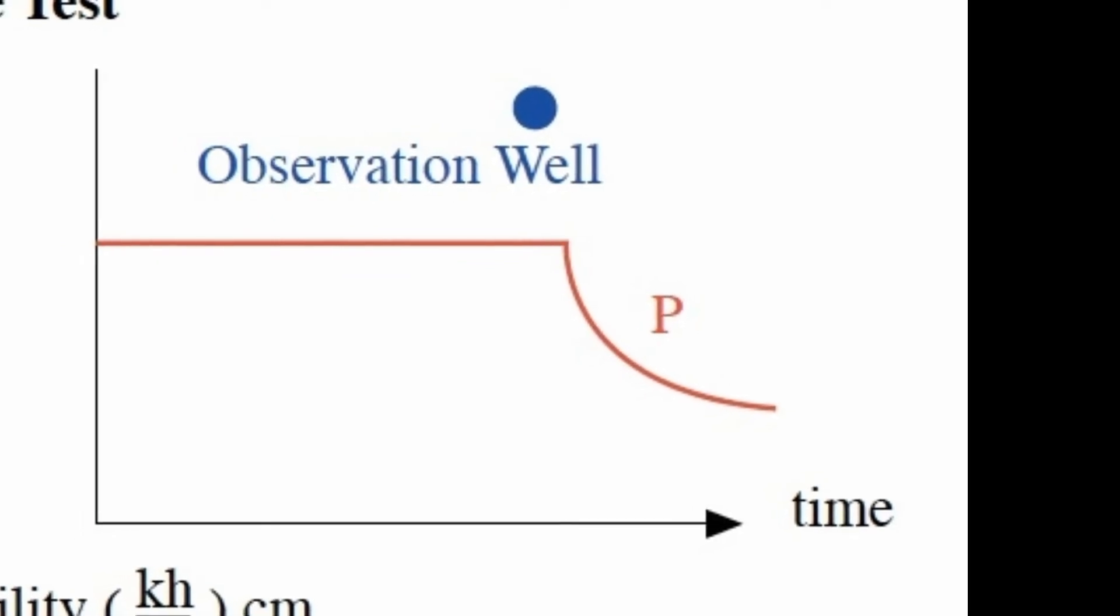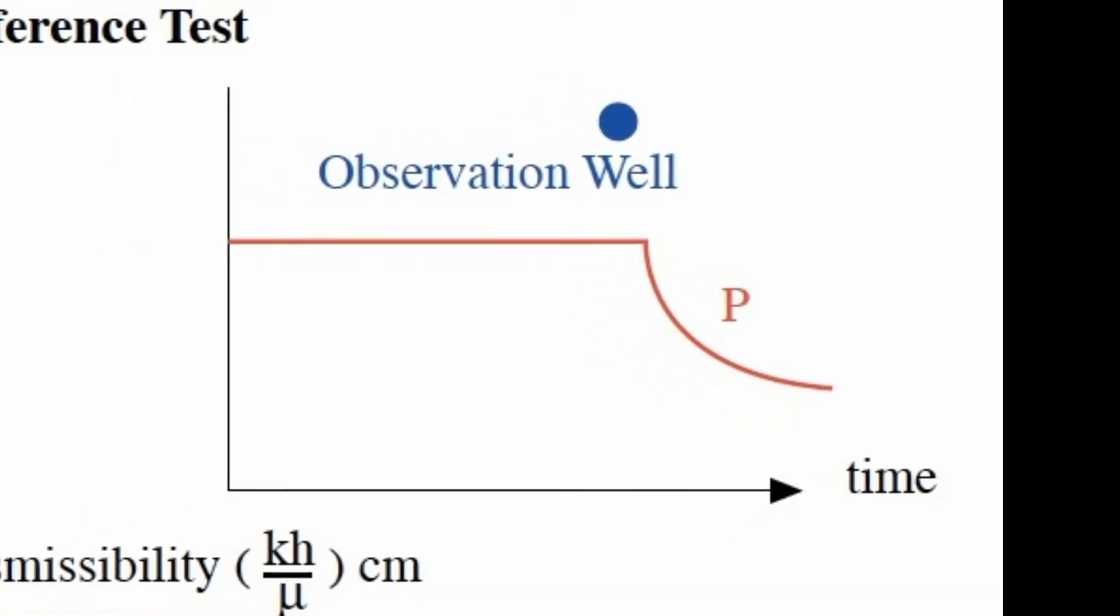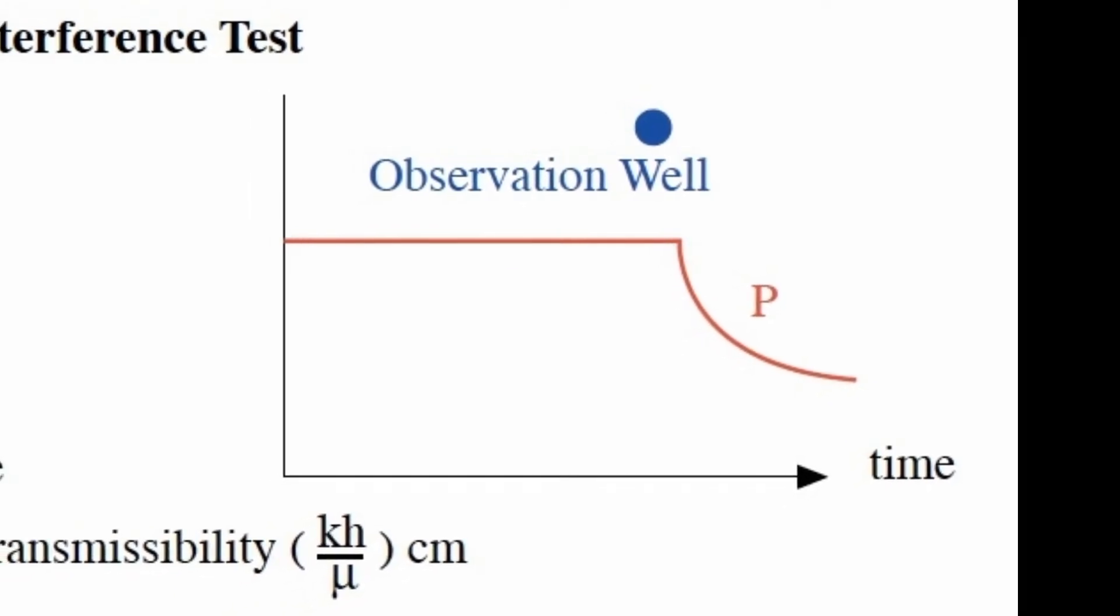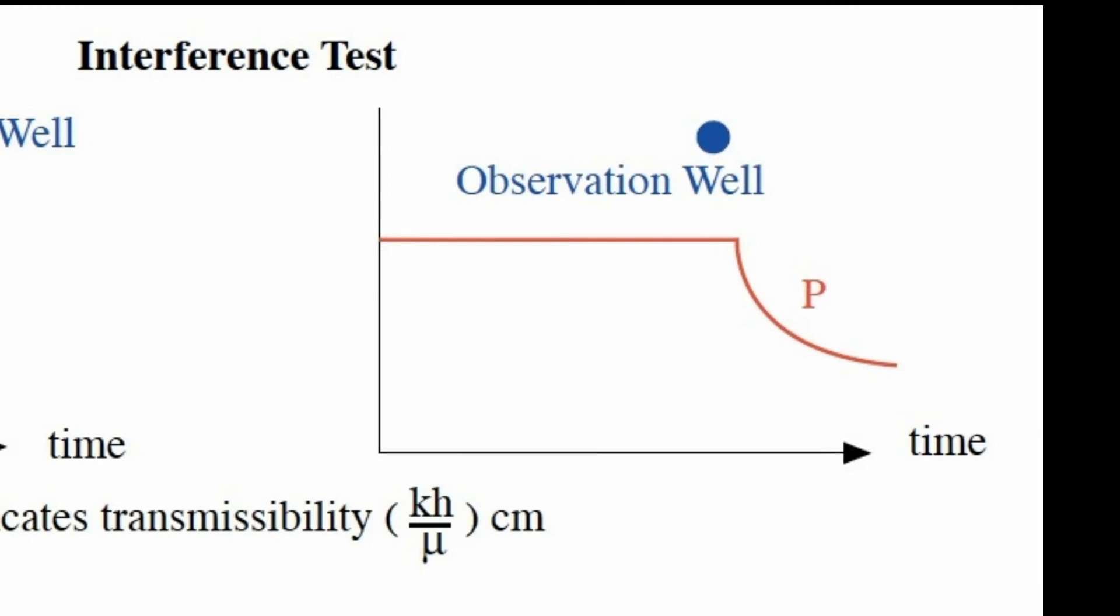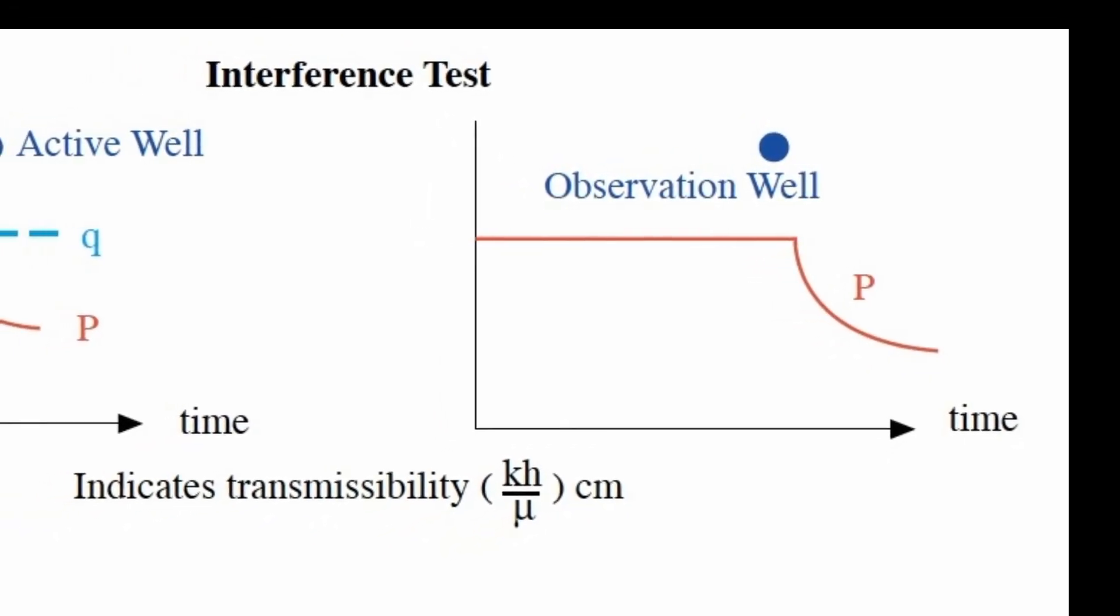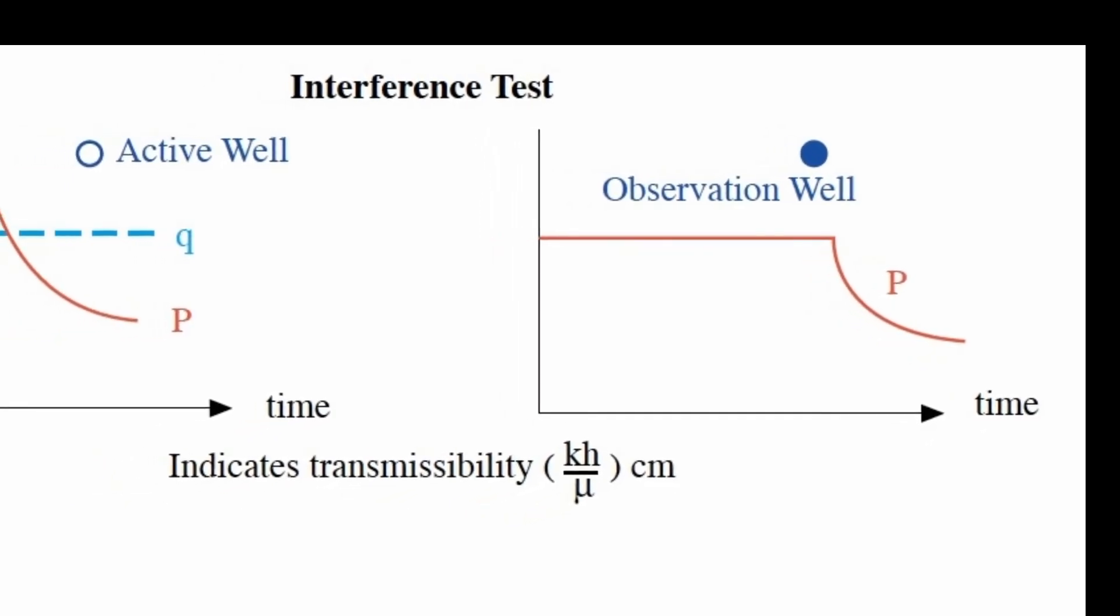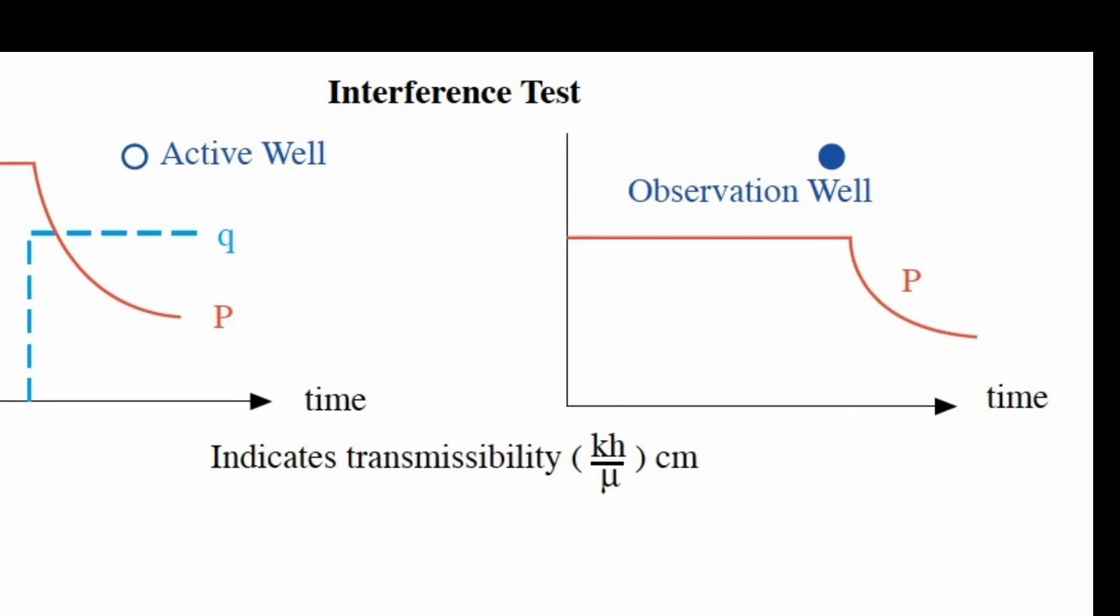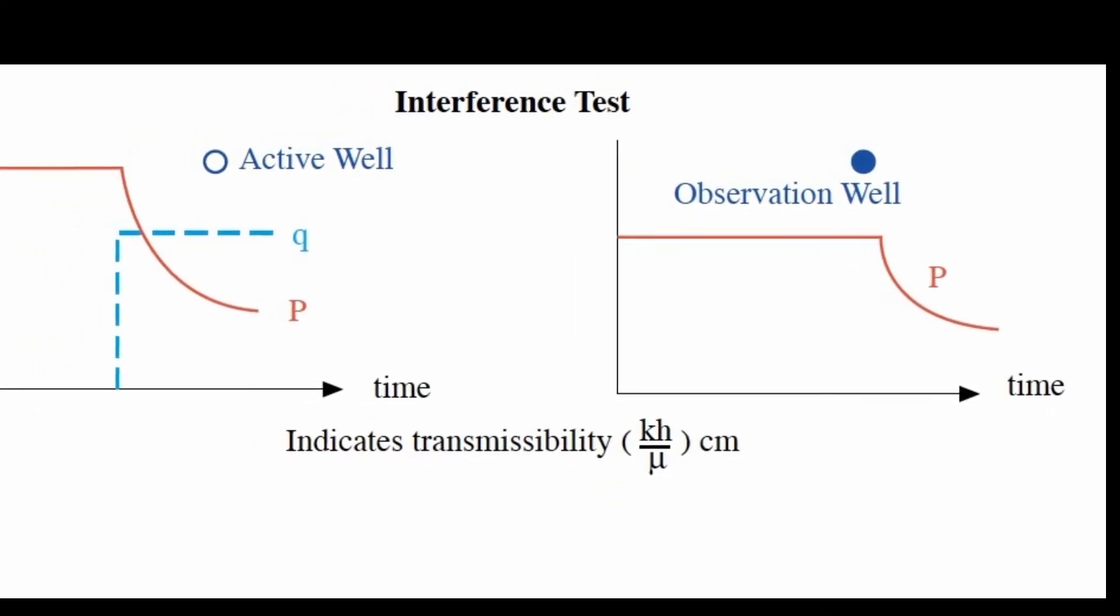Interference test is one form of multiple well testing. These tests are done to find if two or more wells are in pressure communication in the same reservoir, and at which point communication exists between the wells, and to estimate the vertical formation permeability and porosity.